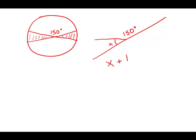Well, these two angles together add up to a straight line. x plus 150 degrees equals 180 degrees, the angle on a straight line. Subtract 150 degrees from both sides and we get that this small angle is 30 degrees.